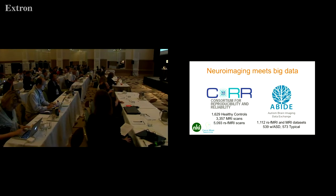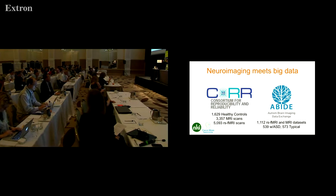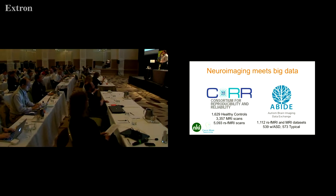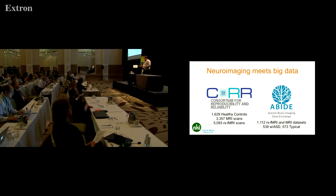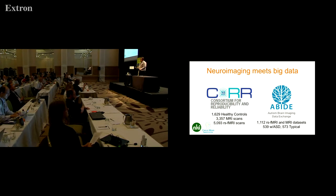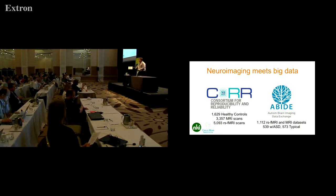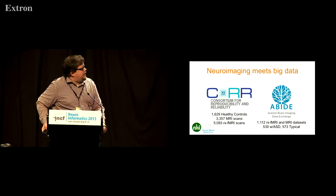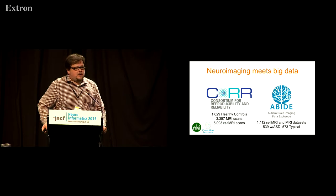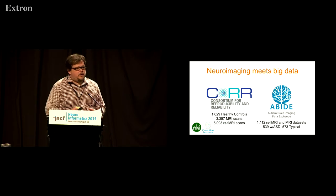Through several of the efforts I'm involved with in the International Neuroimaging Data Sharing Initiative and the 1000 Functional Connectomes Project, we're amassing and sharing thousands of datasets from a variety of different populations. Here are two examples. One is the ABIDE dataset, which is 1,100 individuals, about half of which have autism.